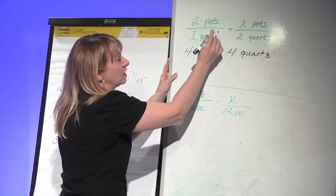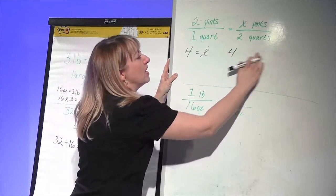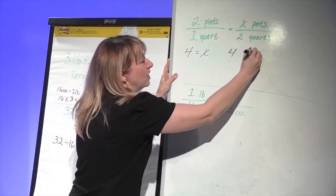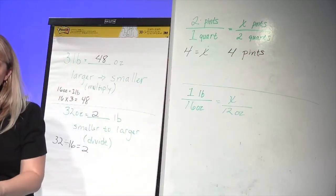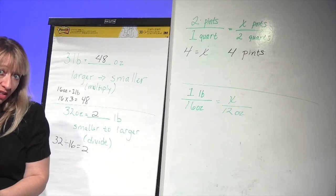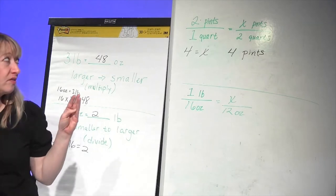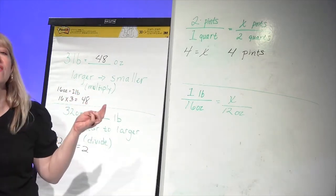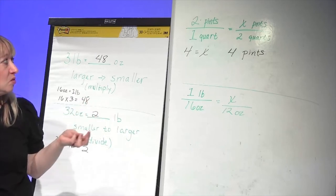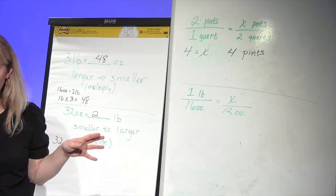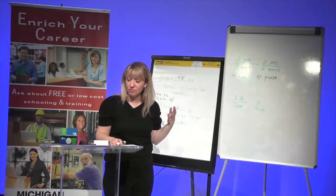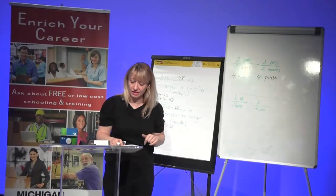I'm sorry, four pints. We wanted pints. And so again, we are going from larger to smaller. So you can multiply because we're going from a larger unit, which is quarts, and we're trying to find pints. So two times two, you get four pints. And again, you could do that with pints, cups, quarts, gallons, whatever it is.